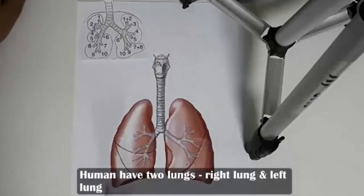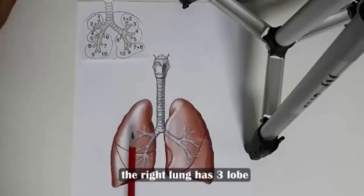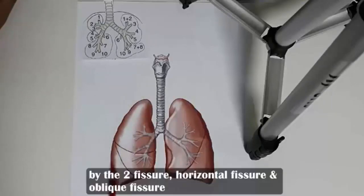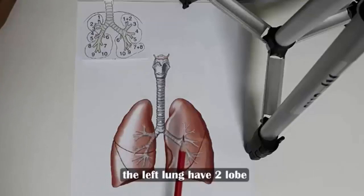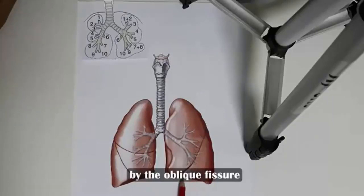Humans have two lungs: right lung and left lung. The right lung has three lobes — upper lobe, middle lobe, and lower lobe — separated by two fissures: horizontal fissure and oblique fissure. The left lung has two lobes — upper lobe and lower lobe — separated by the oblique fissure.